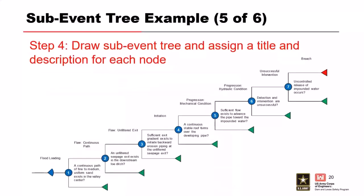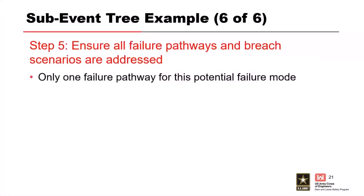In step three, we review the RMC event tree database to see if a similar sub-event tree already exists. In this case, there is one that's almost identical to the one we're evaluating for backward erosion and piping. We could use it directly or just tweak it with the specifics for our failure mode and project. Using the RMC event tree toolbox to draw our own, you can see a slight revision to node one's description; otherwise the two sub-event trees are essentially identical. We have our initiator — flood loading — up front, followed by six step-by-step progression nodes, capped with the breach node. Since there is only one failure pathway, the construction process is complete.